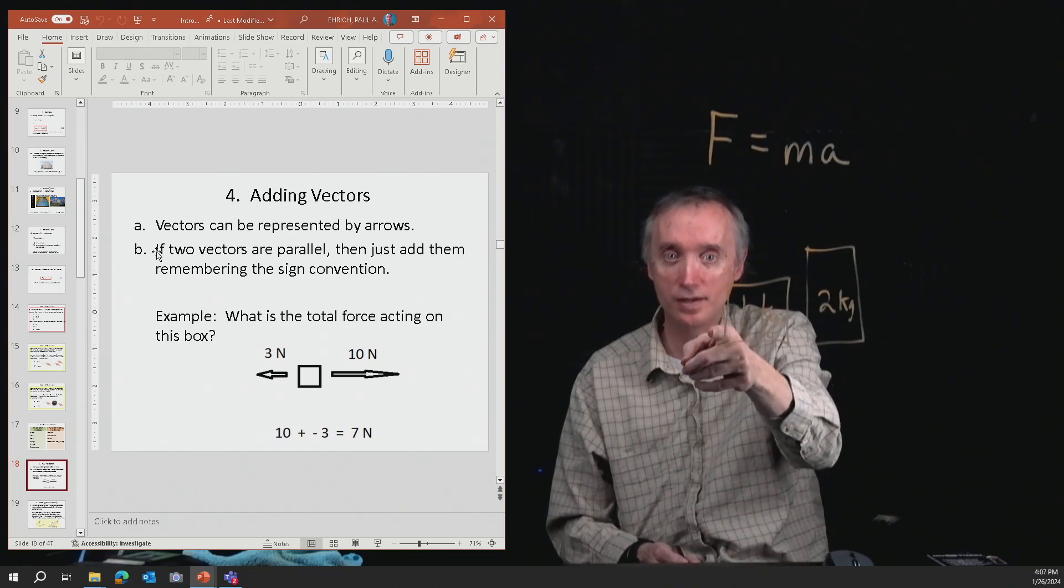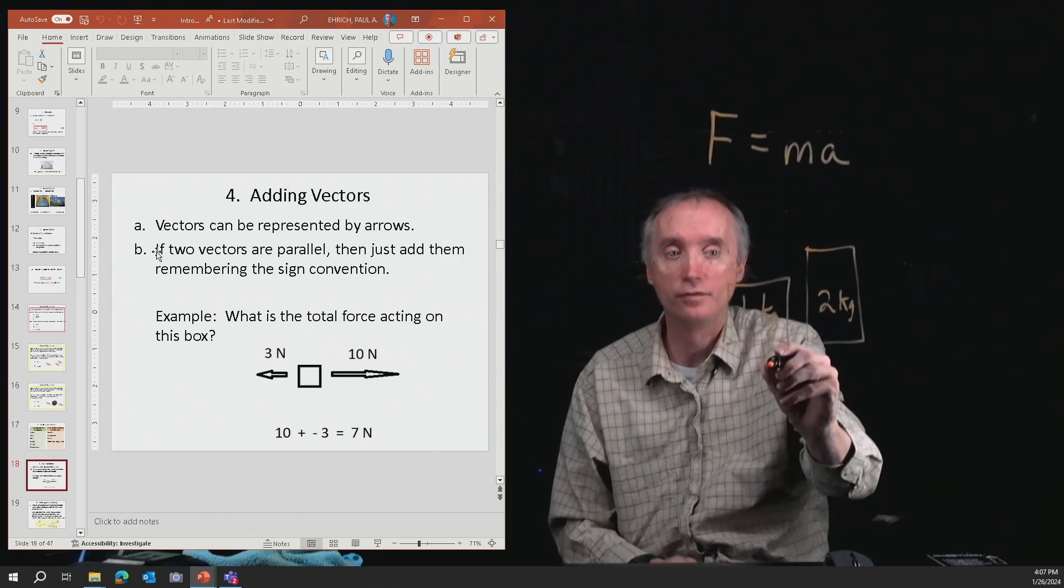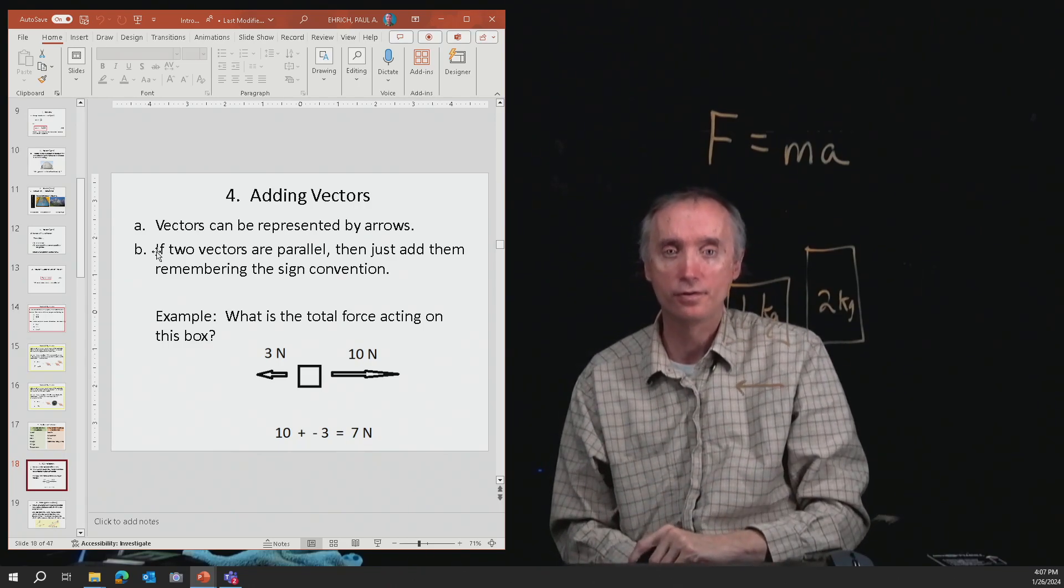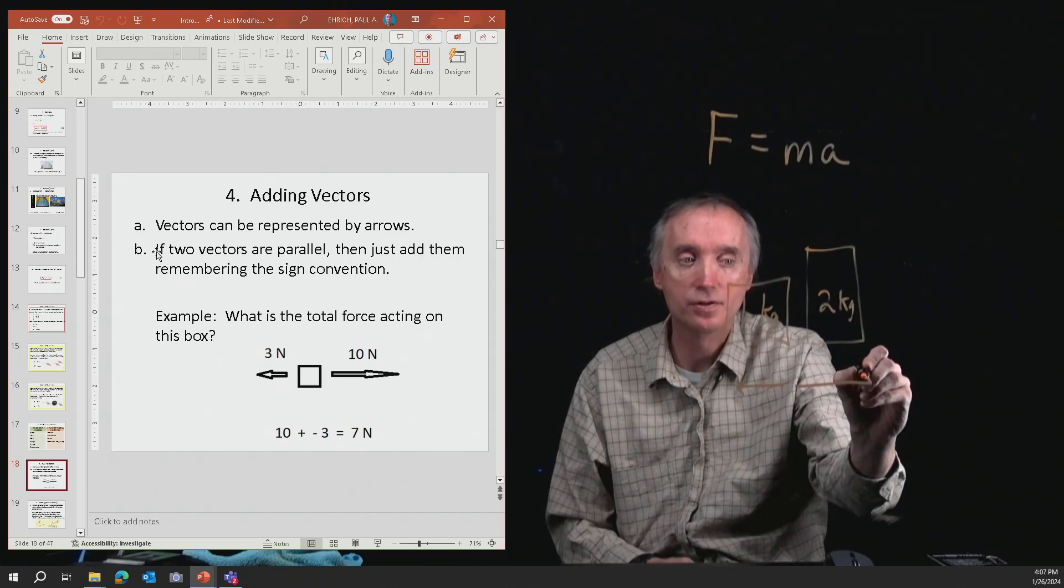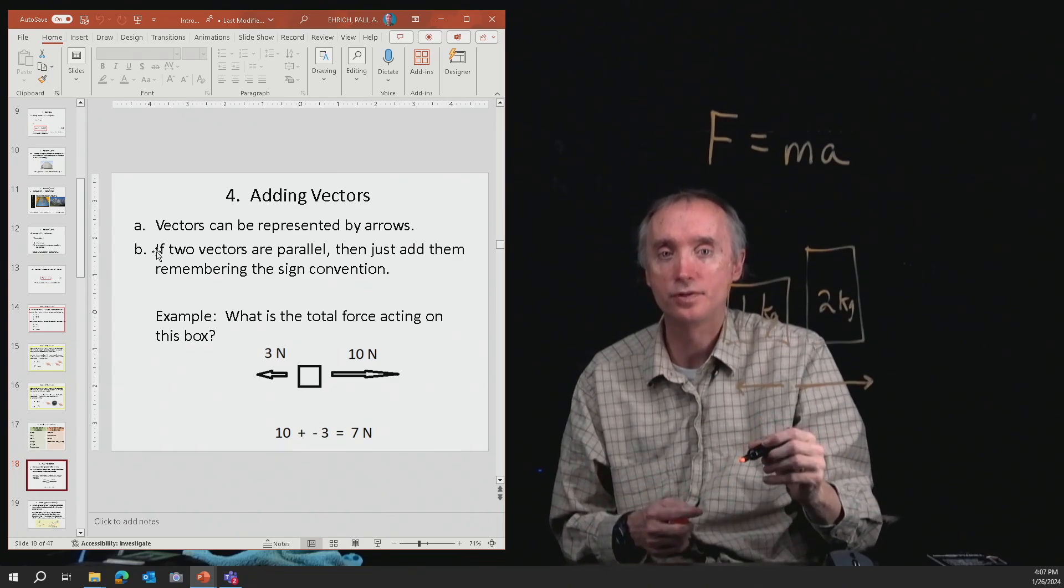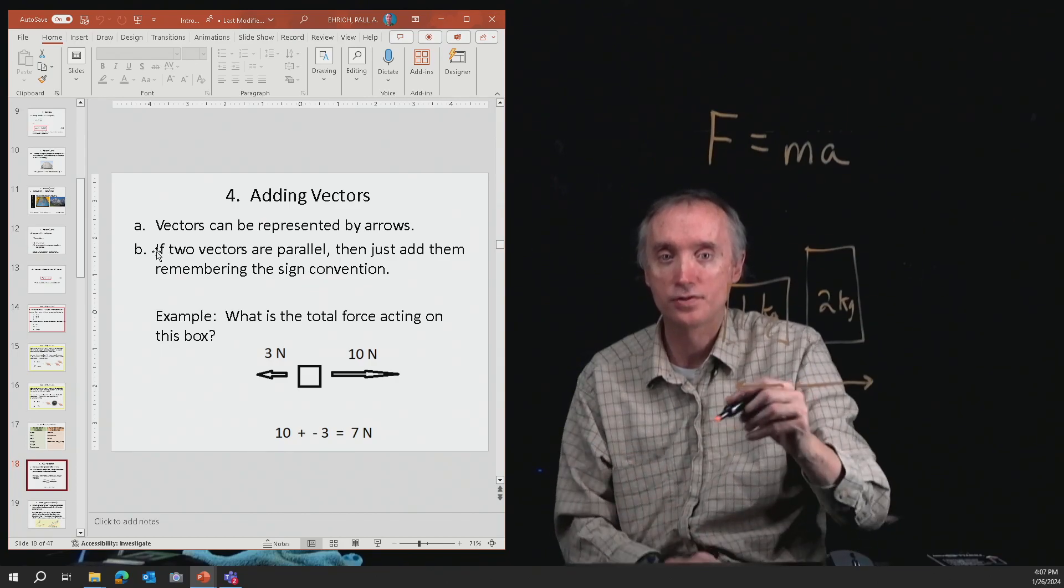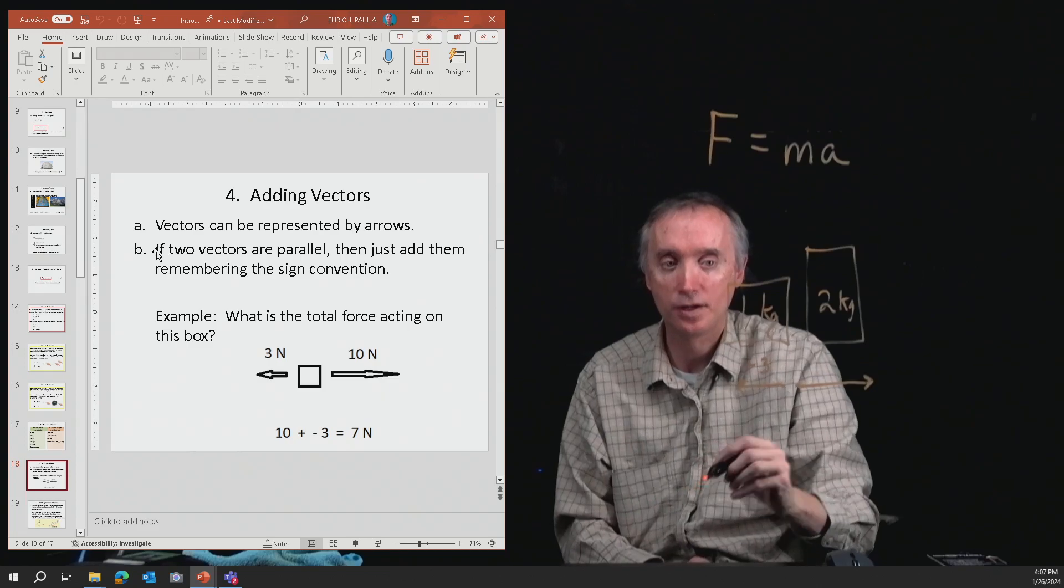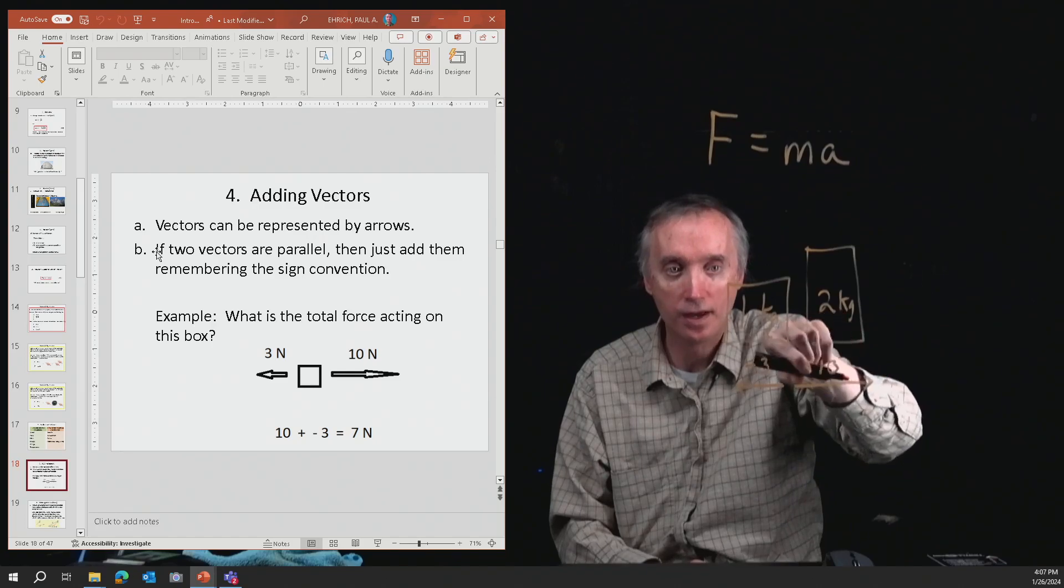So in this case here, you have a force, which is a vector, of three newtons going this way, and then another force of ten newtons going that way. All you've got to do is add them together, but you have to keep in mind the sign convention. So this is actually negative three because it's going that way, and this is positive ten because it's going that way.